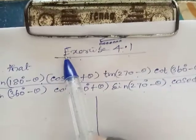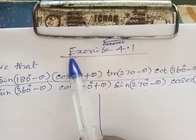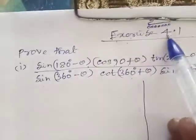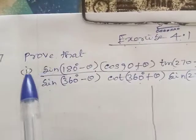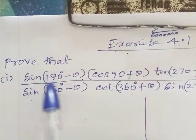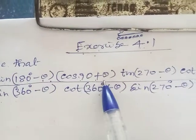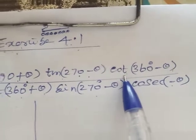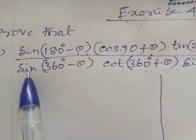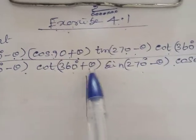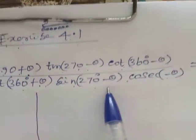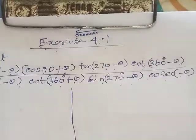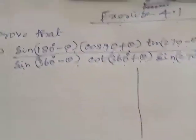My dear students, welcome to my YouTube channel Apostle Mathematics and Motivational channel. Today's lesson is Business Mathematics Exercise 4.1, 7th problem (i). We need to prove that Sin(180-θ) · Cos(90+θ) · Sin(270-θ) · Cos(360-θ) divided by Sin(360-θ) · Cos(360+θ) · Sin(270-θ) · Cos(360-θ) is equal to minus 1.